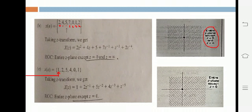Since elements are present on both sides of that arrow, we can say that the region of convergence is the entire z-plane except z equal to 0 and z equal to infinity.